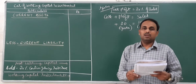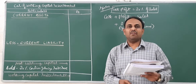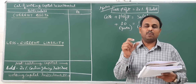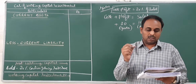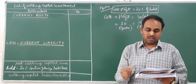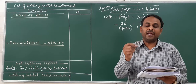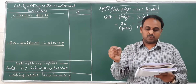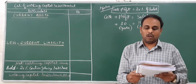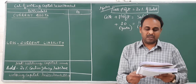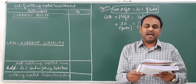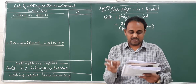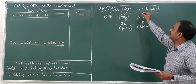We move on to the next problem. The problem looks very simple — it may be a five-mark problem if it comes in the exam. The information given here is about the annual sales projected at eighty thousand units, selling price eight rupees per unit, percentage of net profit on sales is 40%, then average credit period allowed to customers, average credit period allowed by suppliers, and average stock holding in terms of sales requirement. Allow twenty percent for contingencies.